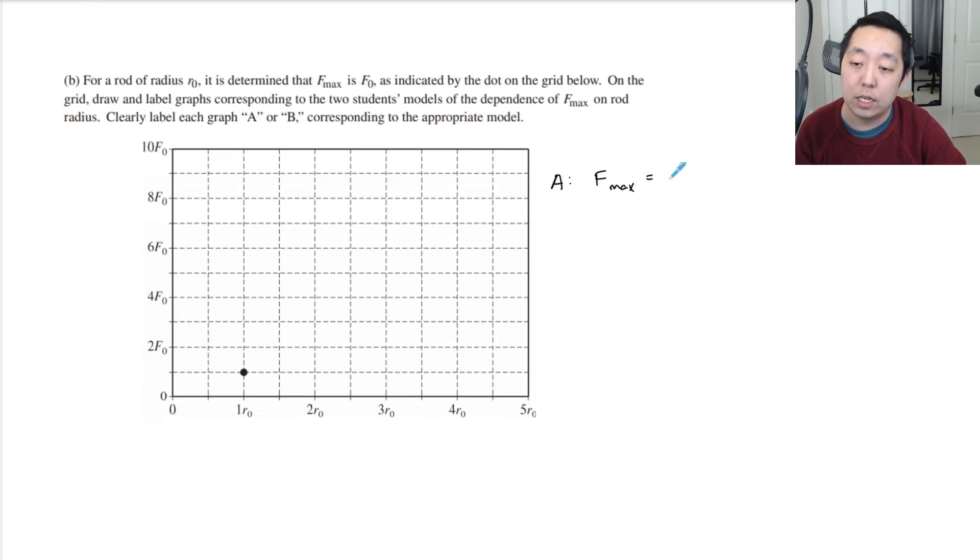F max is equal to some constant times the radius, and for B, his F max should be proportional to pi r squared. Let's call that k_a and k_b, proportional to the cross-sectional area. So in terms of r, if we're measuring r versus F, we would expect a very linear relationship. So if there is zero radius, we expect no force to break it, so there's no y-intercept. So it should be purely linear in terms of relationship for student A. So it should be a constant slope like that.